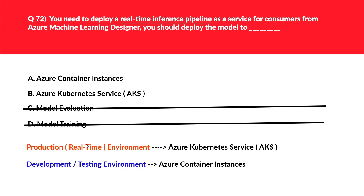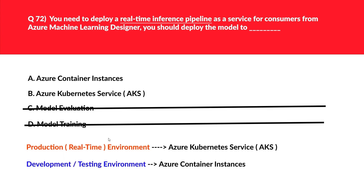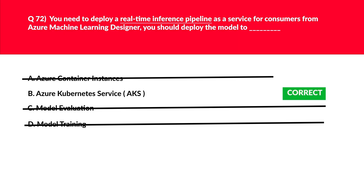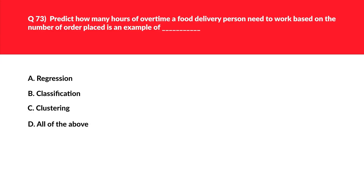The question is looking for real-time production deployment. In production or real time, the answer is Azure Kubernetes Service, also known as AKS. For development or testing, the answer is Azure Container Instance. So we'll reject option A and lock option B — Azure Kubernetes Service — as the correct answer.